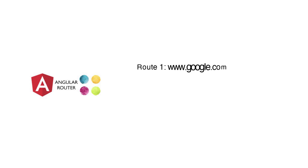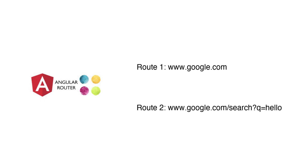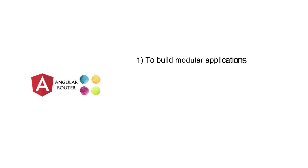What that means is that when you go to www.google.com, that is a route, and when you enter a search string and go to the search results it takes you to www.google.com/search?q=hello. This is a second route which has been mapped to www.google.com.